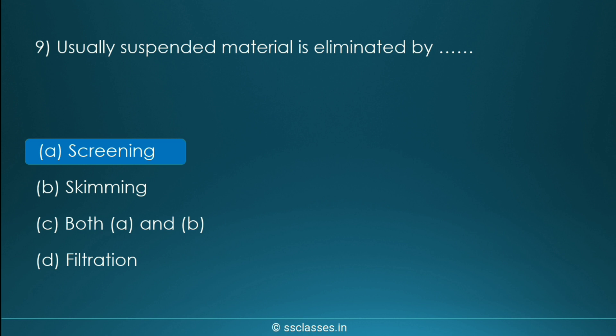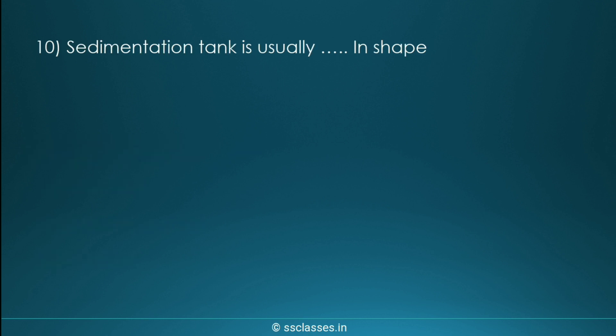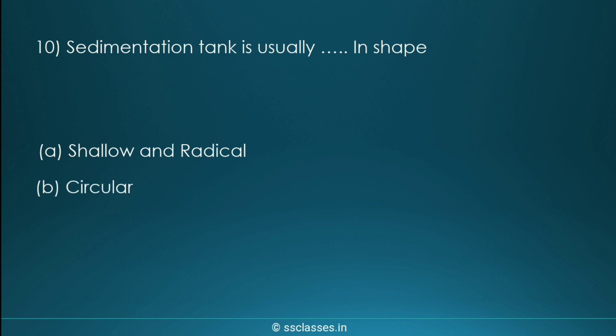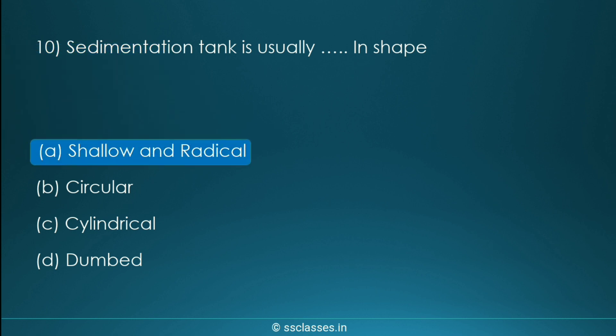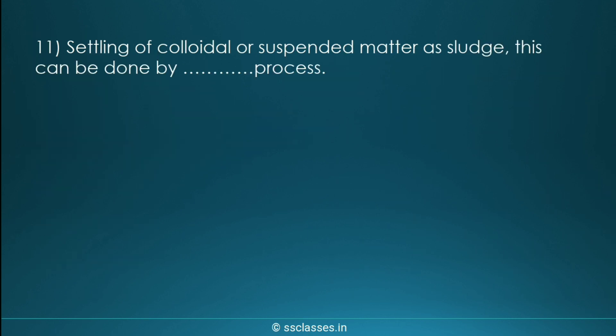Question ten: a sedimentation tank is usually in which shape? Options are shallow and radial, circular, cylindrical, or dumbbell-shaped. The correct answer is shallow and radial — this is the shape of a sedimentation tank.